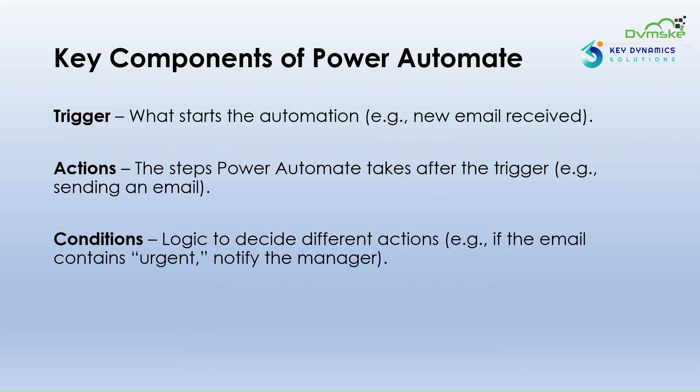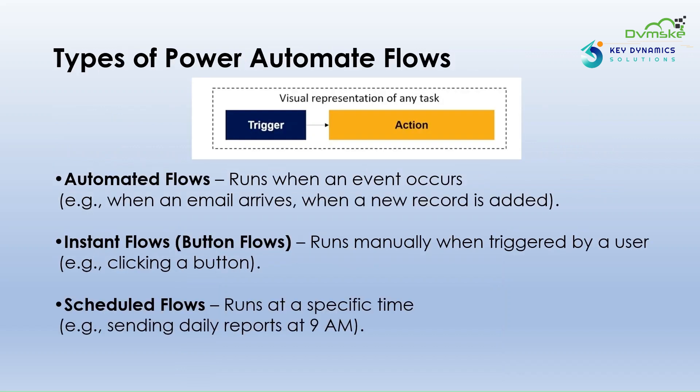There are three types of Power Automate flows: Automated Flows, Instant Flows and Scheduled Flows.